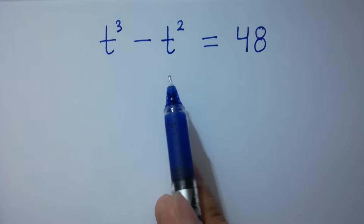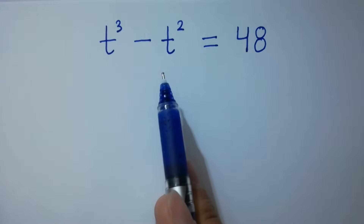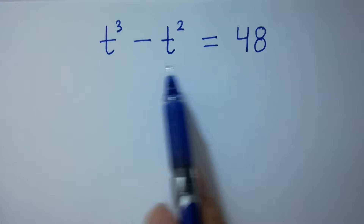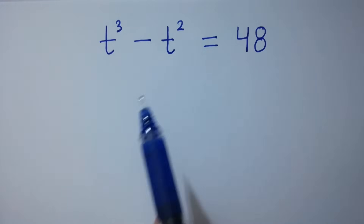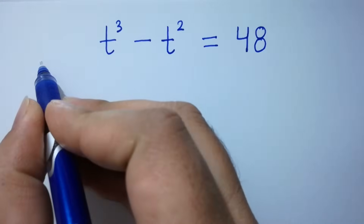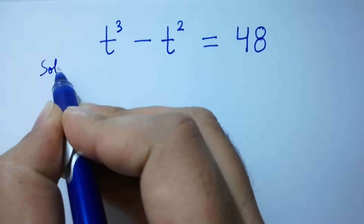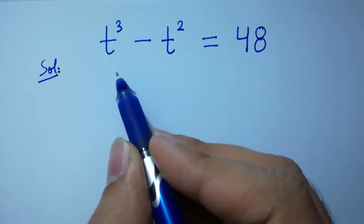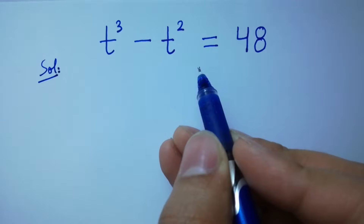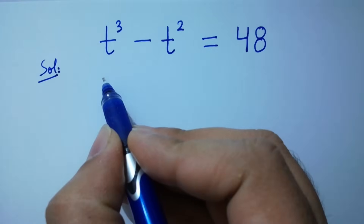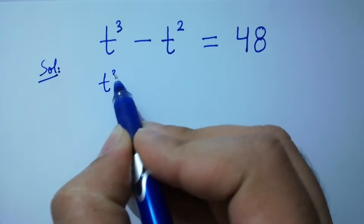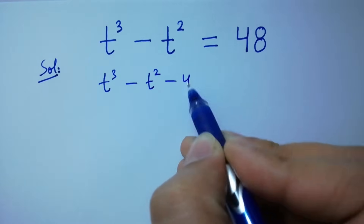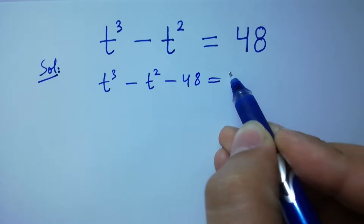Hello friends, find the value of t if t cubed minus t squared equals 48. Let's have a solution. t cubed minus t squared equals 48 can be written as t cubed minus t squared minus 48 equals zero.